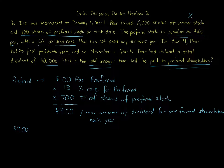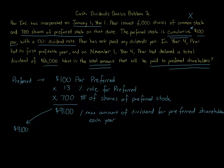So $9,100 is the maximum amount per year. We're going to need that number going forward. It's not required to be paid, but it's important because remember — it's cumulative preferred stock. Pair has not paid any dividends yet. We're looking from January 1st, year one. In year four, pair has its first profitable year. On November 1st, year four, pair declares a total dividend of $66,000.